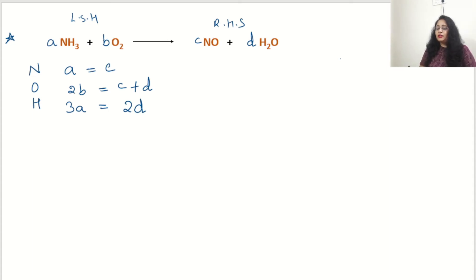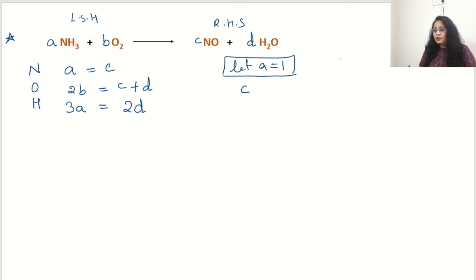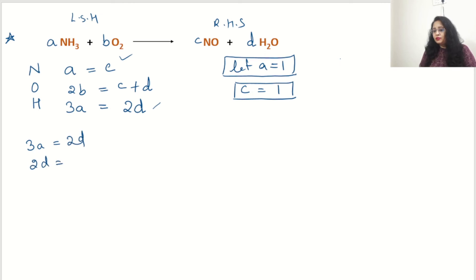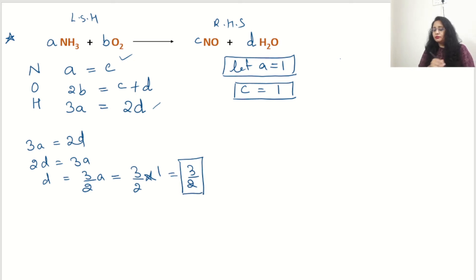We have 3 equations and now we assume. Let A = 1. From equation 1 (A = C), C is also 1. From the third equation, 2D = 3A, so D = 3A/2 = 3/2. The value of D is 3/2.